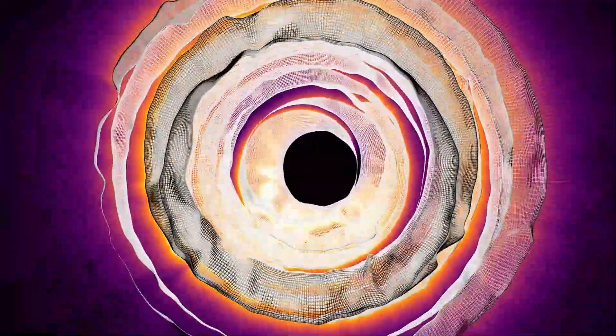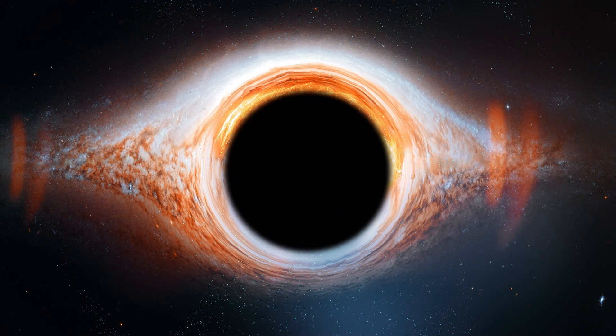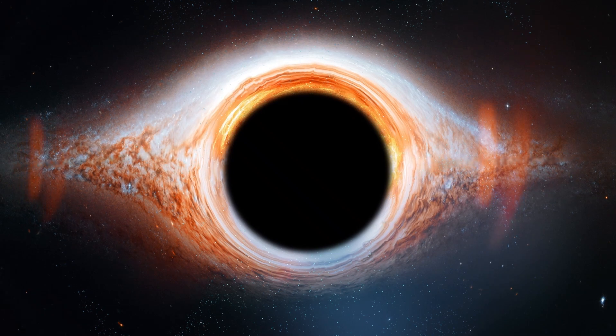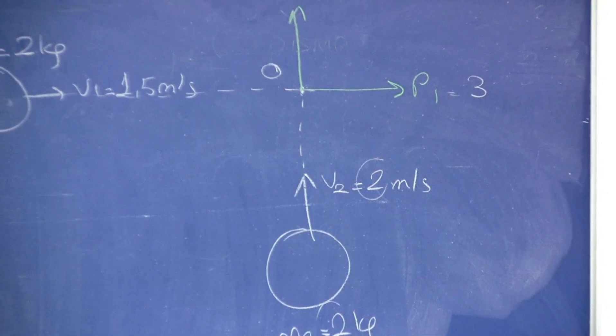If the alignment is just right, the deflected light rays can converge to a focal point, creating a recognizable image of the background object. This effect is similar to how a magnifying glass focuses light to form an image. Depending on the precise geometry, gravitational lensing can produce multiple images of the same background object.